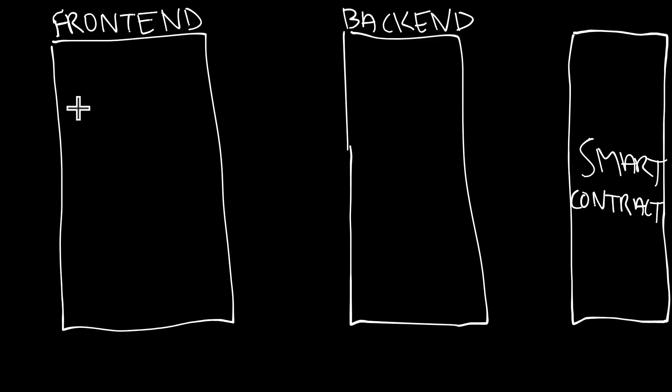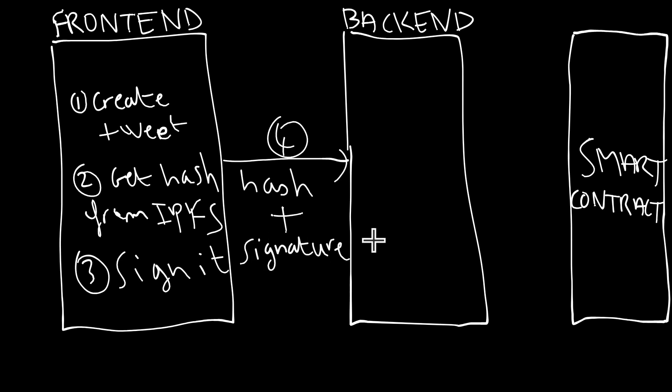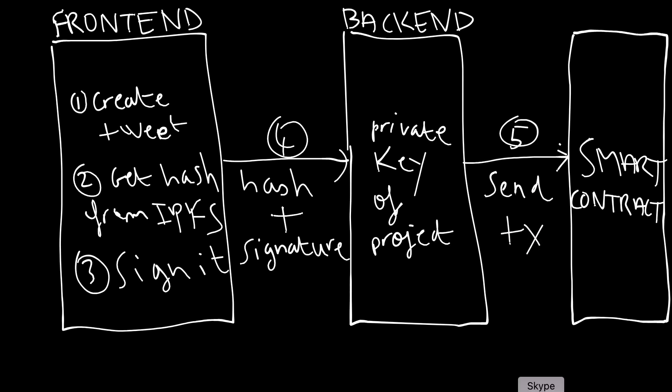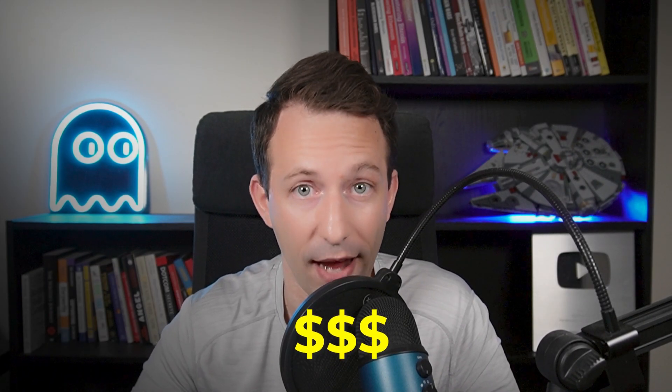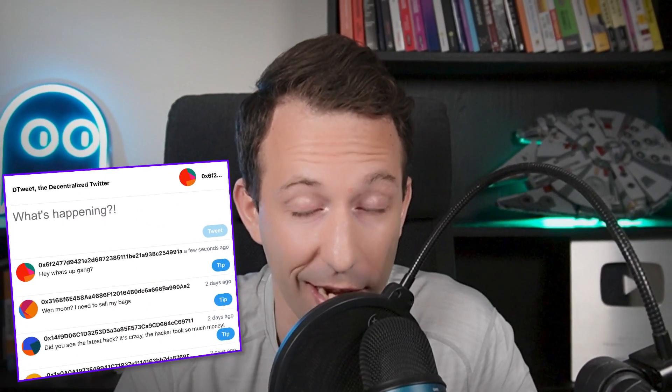Thanks to IPFS, we have decreased a lot the cost of using our app. But users still have to pay for transactions when they send a new tweet, because they have to store the hash on the blockchain. What we could do is delegate the transactions to a backend. Users would create tweets on the frontend, sign them with their wallet to guarantee their integrity, and send them to the backend. It would be the backend that stores the hash on the blockchain, and transaction fees would be paid by the wallet of the project, not the wallet of the user — meaning us developers will pay for the users. This is what we call a metatransaction.